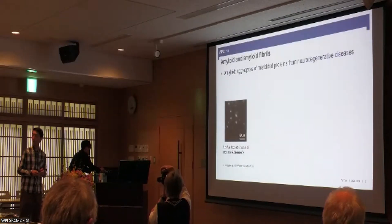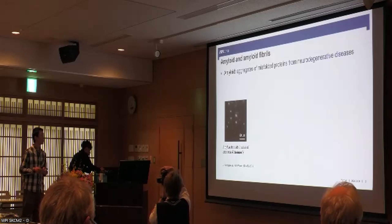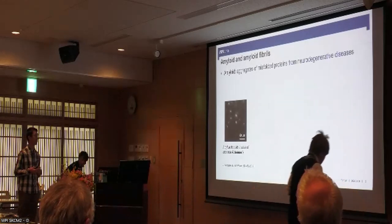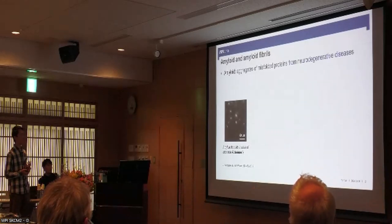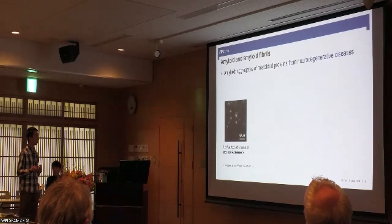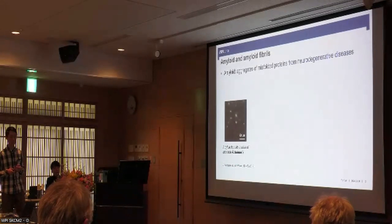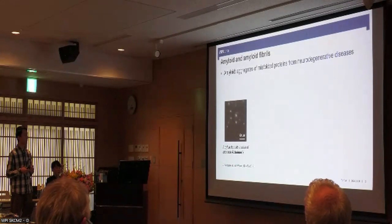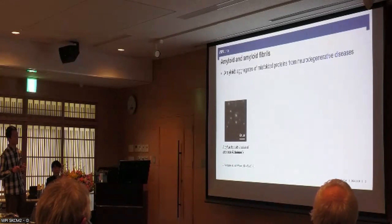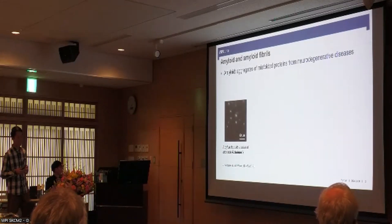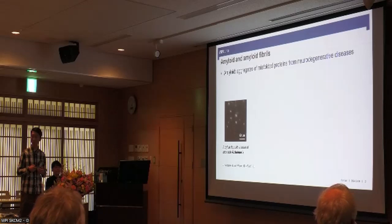So a little bit of background: what is amyloid? It's initially found as an aggregate of proteins that are in the tissues of patients with neurodegenerative diseases. Here, this is a section of amyloid deposits in the brain of mice with Alzheimer's disease, and because of their presence, they are usually considered pathogenic in these conditions.